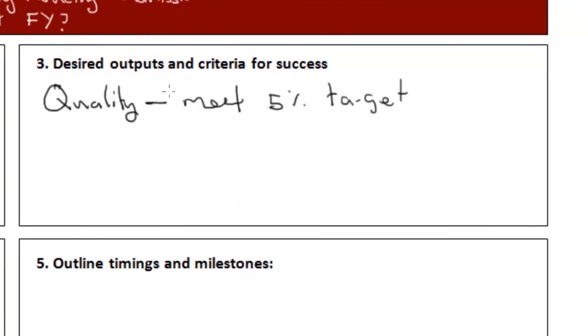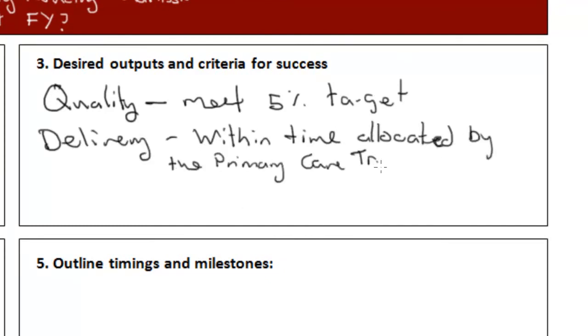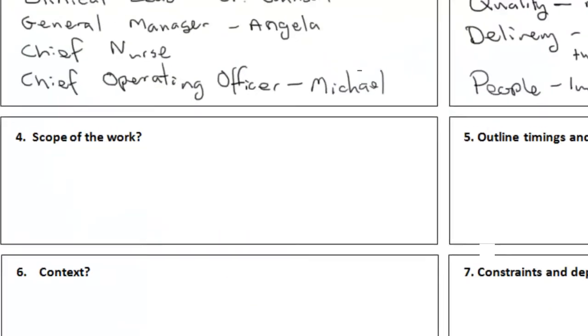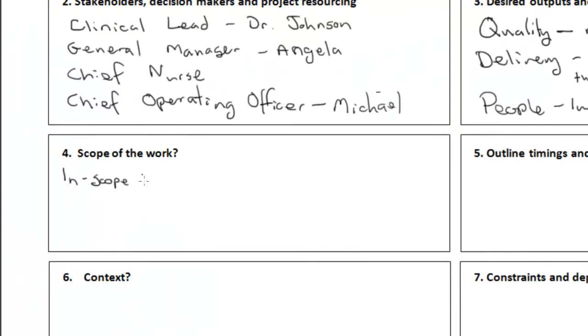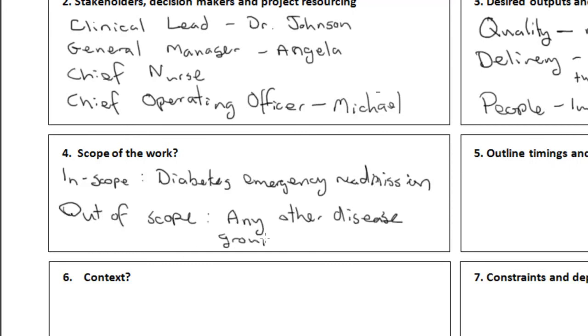The desired outputs are improved quality, delivery within the allocated timeframe, and improved patient experience. Specifically, in scope is diabetes emergency and readmissions only. That means all other disease groups are out of scope.